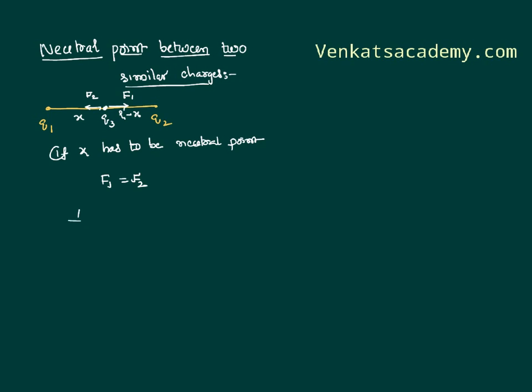I can write F1 as force between Q1 and Q3 as 1 by 4 pi epsilon naught, Q1, Q3 by separation between them is x square. Force between Q3 and Q2 is 1 by 4 pi epsilon naught. As per the Coulomb's inverse square law, r minus x whole square. We can cancel all the terms and what is remaining is Q1 by x square equal to Q2 by r minus x whole square.